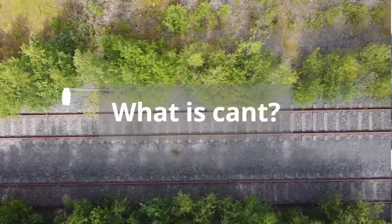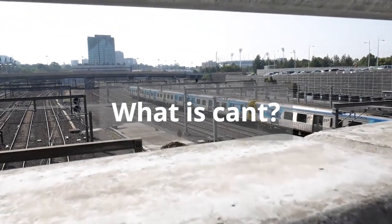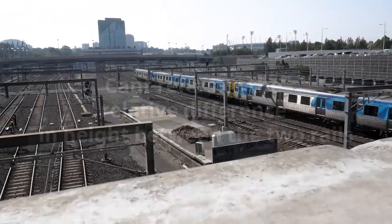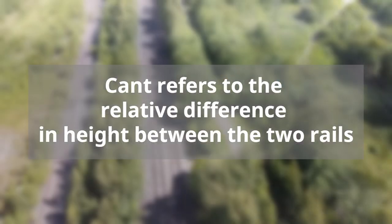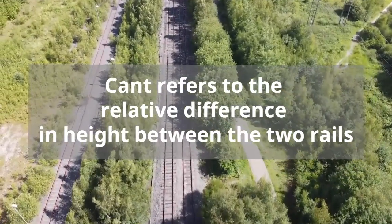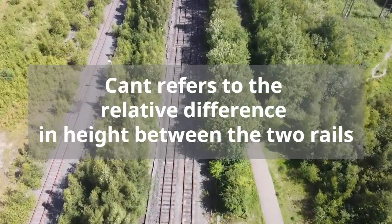First, let's look at what we mean when we say cant. On the railway, cant refers to the difference in height between the two rails. This means one of the two rails has been lifted above the other.